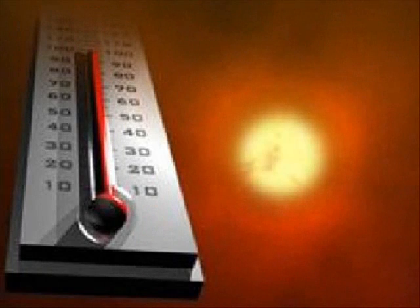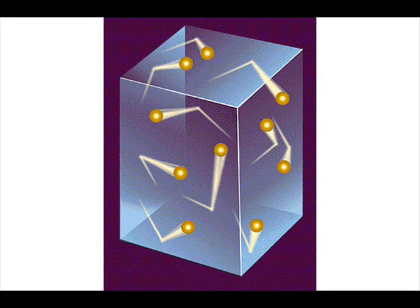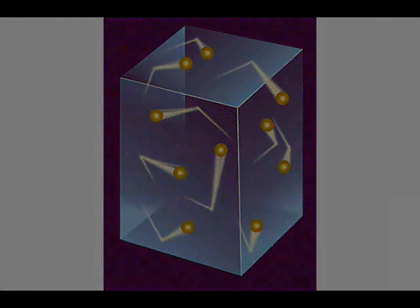This photon is then absorbed by the surrounding environment and produces heat from the macroscopic view. Alternatively, sometimes kinetic energy is produced in the product molecules of the redox reaction, and from the macroscopic view, this manifests as heat as well.